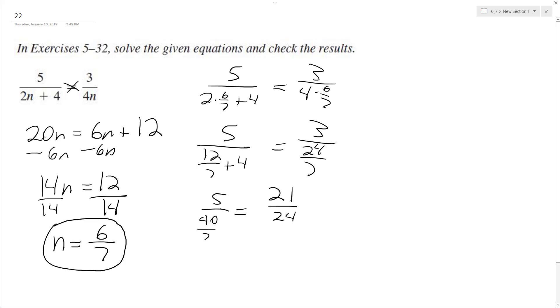This ends up being 35 over 40 equals 21 over 24.